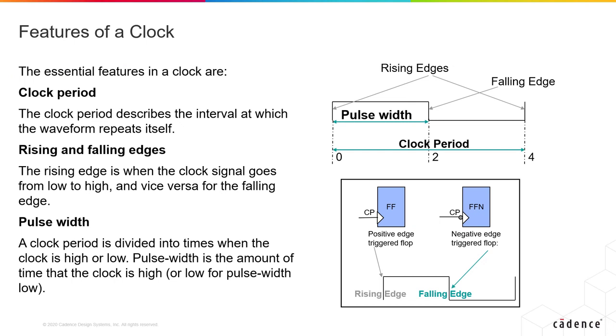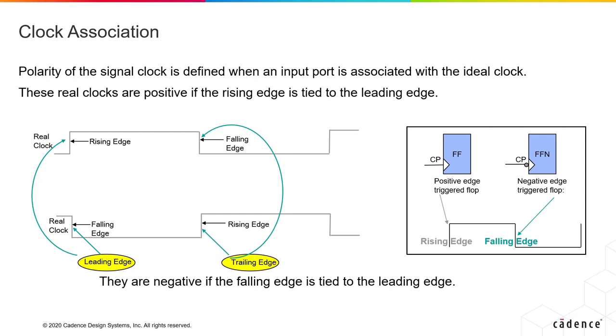The clock has multiple properties. One of them being the clock period, which defines at what interval the waveform repeats itself. The rising edge is when the clock is going from low to high, the falling edge is when the clock is going from high to low. The pulse width is determined based on how much the clock is high. When you associate those ideal clocks with an actual port, if the port is driving only positive edge-triggered flops then a rising edge can be set for the initial leading edge of the clock, and if the port is driving negative edge-triggered flops, then a falling edge can be the leading edge. If you have a mixed bag of positive and negative edge-triggered flops in your design, it is best to define separate clocks for the two types of flops.